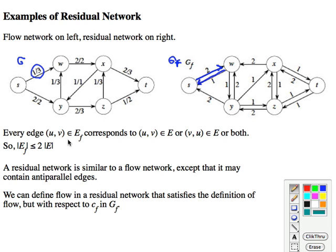Just a basic quantitative fact. Every edge in our residual network on the right corresponds either to an original edge in the original network or the reverse of an edge in the original network or both. So the upper bound on the number of edges you can have in your residual network is twice the number of the original network. And so that'll be important in our big O analysis that we know that it's only a constant number of more edges. They're similar, except they have anti-parallel edges, which aren't allowed by our algorithms, but you can still define the legal flow in a network with anti-parallel edges. So we can still define a flow that satisfies the definition, but it's going to be with respect to this C of F capacity rather than with respect to the original capacities in the original network.